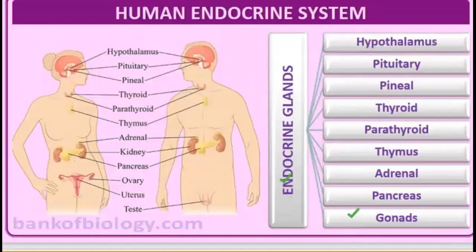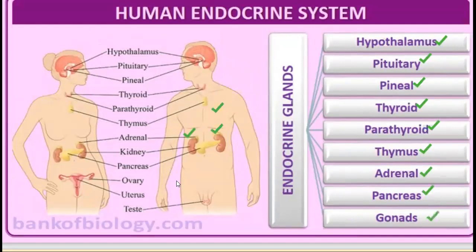Now let us read about the endocrine glands present in human beings. There are many hormones you have to remember. Hypothalamus, then pituitary, then pineal gland, then thyroid, then parathyroid gland, then thymus gland present in our chest, then the adrenal gland present on the kidneys, then the pancreas, then the gonads. These are all of our endocrine glands. Remember their names along with their secretions — this is very important.